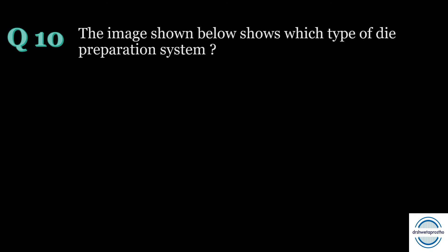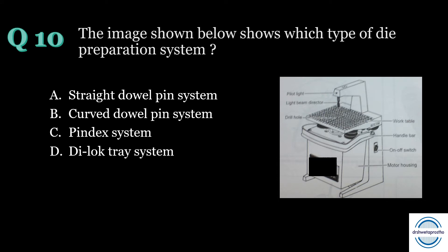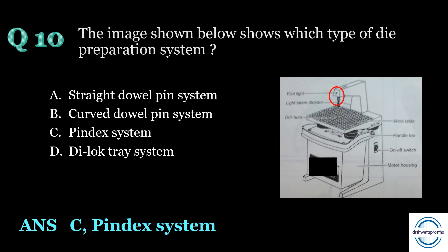Question number ten: The image shows which type of die preparation system? A) straight double pin system, B) curved double pin system, C) pindex system, or D) dialogue tray system? The answer is C — pindex system. The pindex system is a post-pour die preparation system. It has a red pilot light lamp on the top as seen in the image. The red pilot pointer acts as a guide while drilling, and the platform below is spring-mounted — when pressed down, it automatically starts the drill projecting through the slot.